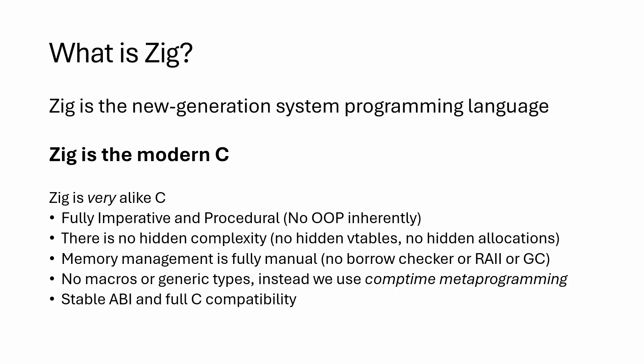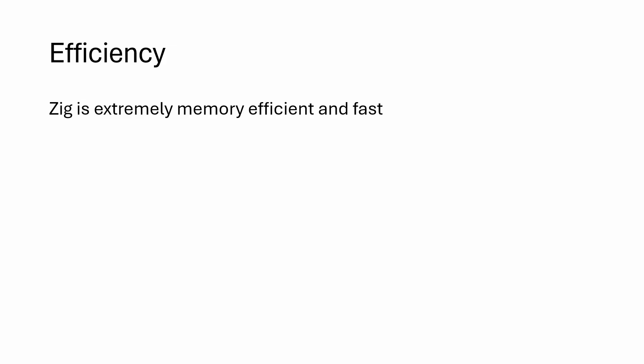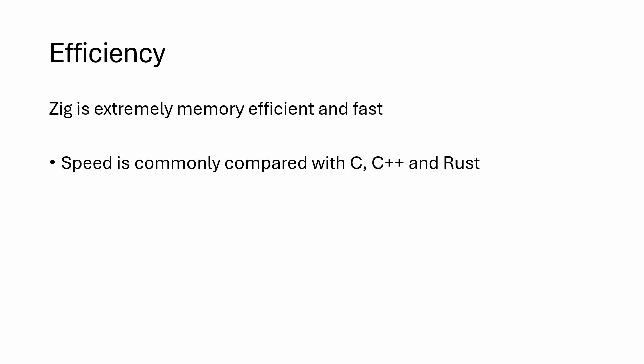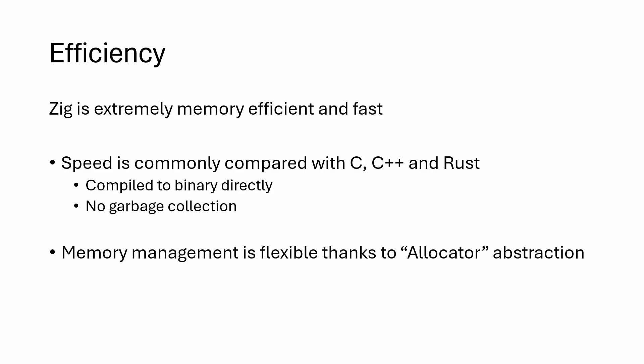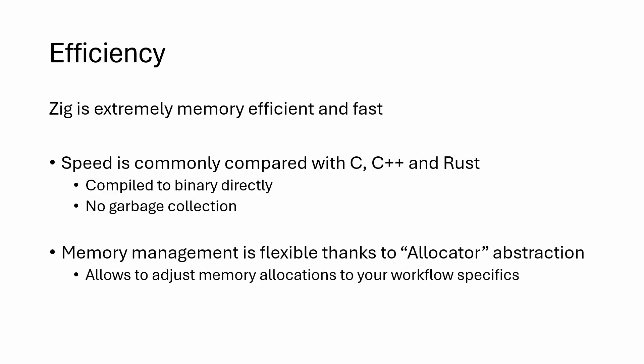Zig also has a stable ABI and full C compatibility — you can use a C shared library within Zig and vice versa. Regarding efficiency, Zig is very memory efficient and fast. Its speed is commonly compared with C, C++, and Rust, because it is compiled to a binary directly and has no garbage collection, so there is nothing to stop us. The memory management in Zig is also fully flexible thanks to an allocator abstraction, which allows us to adjust our memory allocation patterns to our workflow specifics.